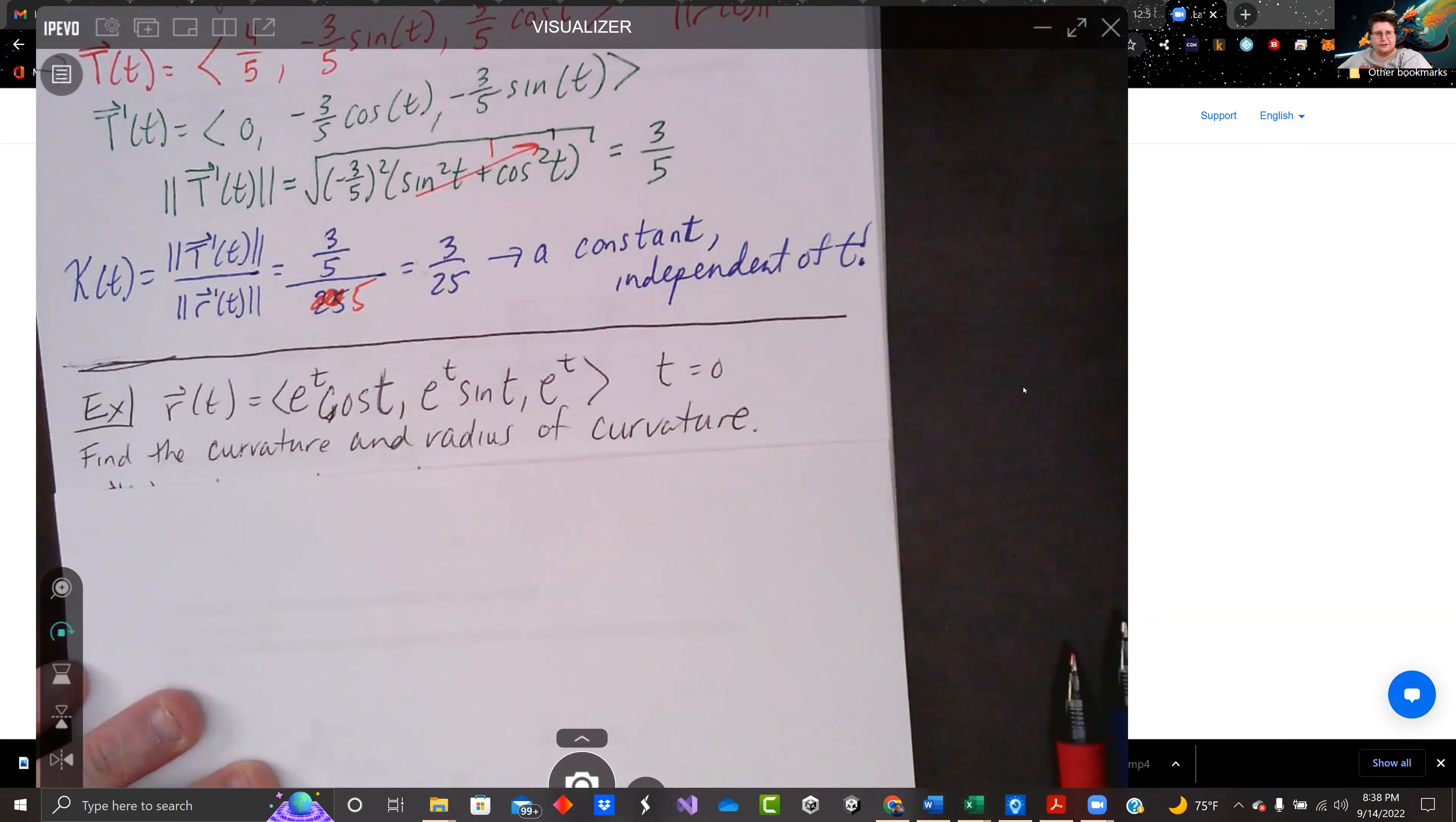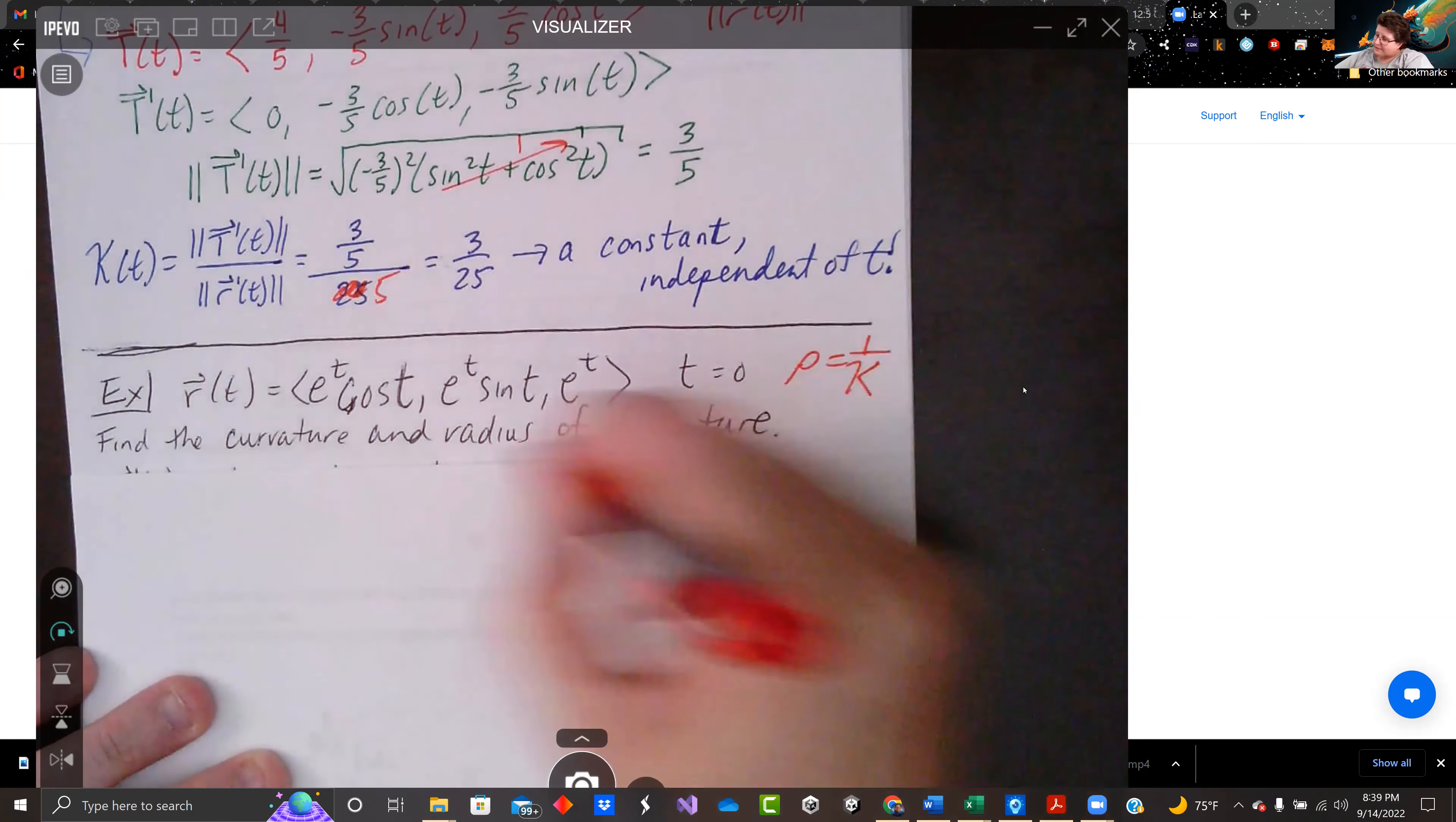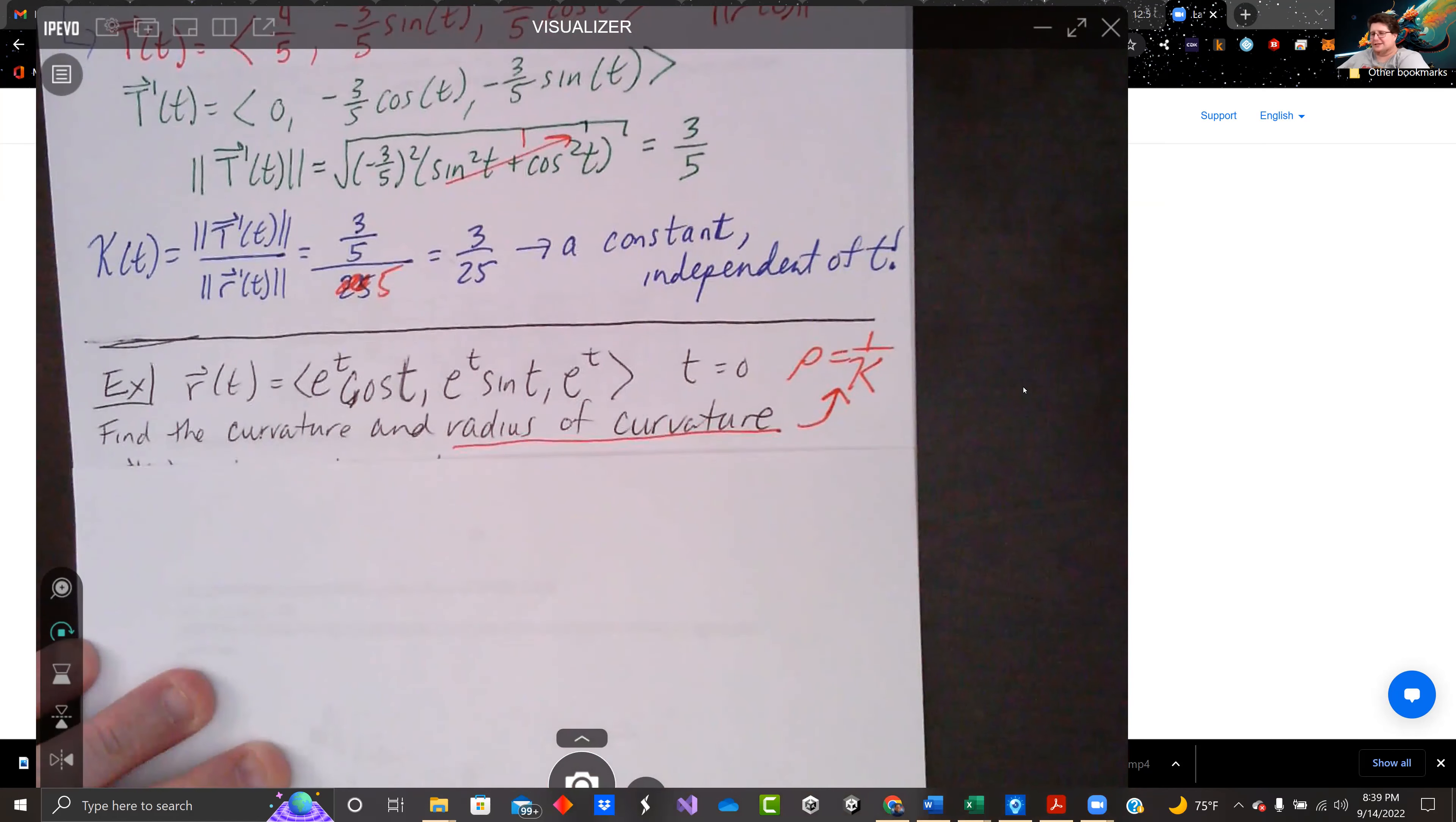I don't know that I showed you radius of curvature yet, but we're going to do it. Radius of curvature is rho equals 1 over kappa. That's the radius of curvature. I think that's coming up in 12.5D. Look at me doing these videos out of sequence.